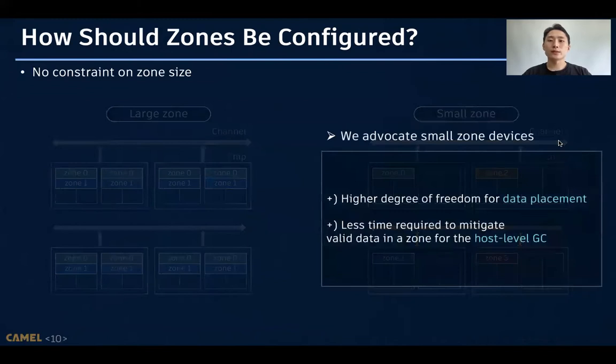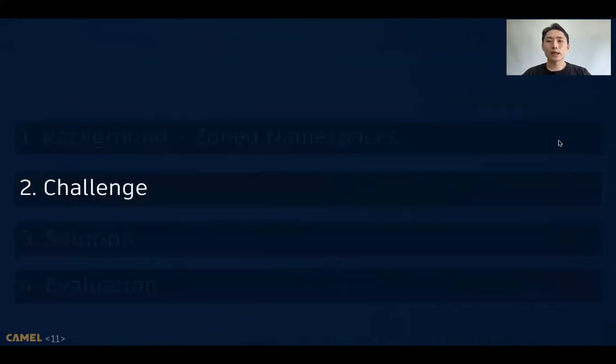We advocate using the small-zone devices because of two reasons. First, they provide higher degree of freedom for data placement. Next, it requires less time to migrate valid data in a zone for the host-level garbage collection. So, it's more easy to schedule garbage collection in idle time without making other requests being delayed.